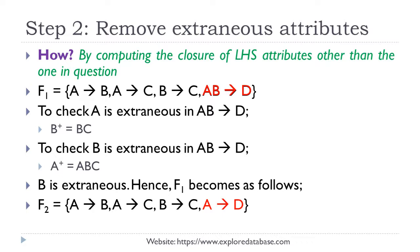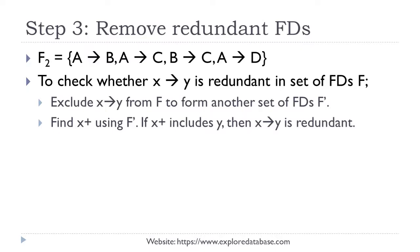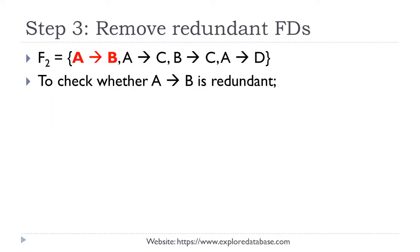f2 will be taken forward for Step 3. Step 3 is to identify and remove any redundant functional dependencies. To check whether a functional dependency x→y is redundant in a set f, we first exclude that FD from f to form f'. Then we find the closure of the left-hand side attribute using only f'. If that closure includes the right-hand side attribute, then the FD is redundant. Let us now check whether there are any redundant functional dependencies in f2.